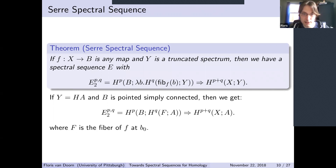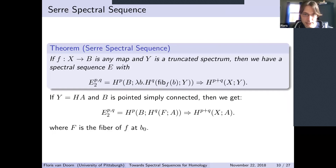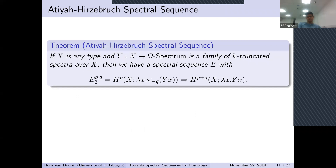During the construction of the Serre spectral sequence, we also constructed the Atiyah–Hirzebruch spectral sequence. One remark: the Serre spectral sequence only works for unreduced cohomology. If you replace cohomology by reduced cohomology, the convergence doesn't work—you can still define a spectral sequence but it converges to a less natural space.